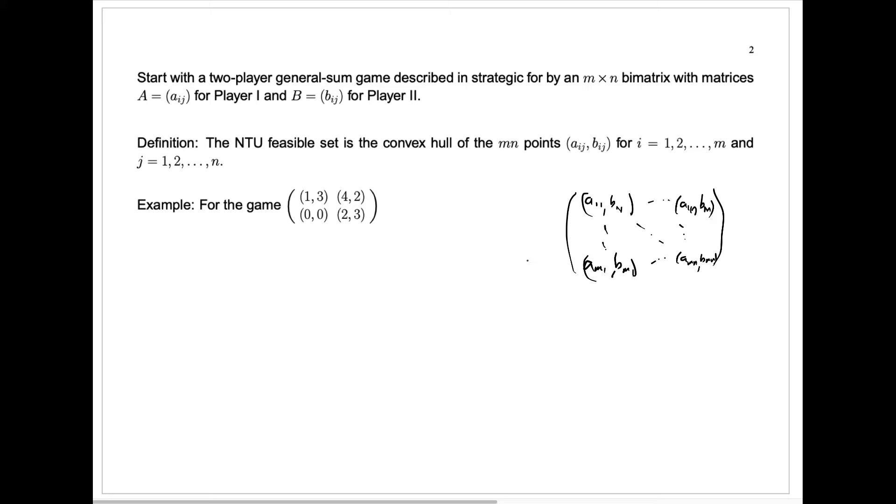So, we have our standard bi-matrix describing the payouts in the game, and we'll start by talking about the non-transferable utility case. That's where the players are allowed to make agreements as to what moves to play, which will determine where they end up in the game, but then they have to accept those payouts as their actual return.